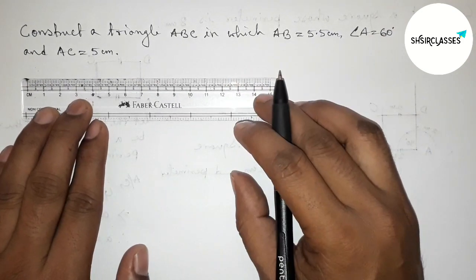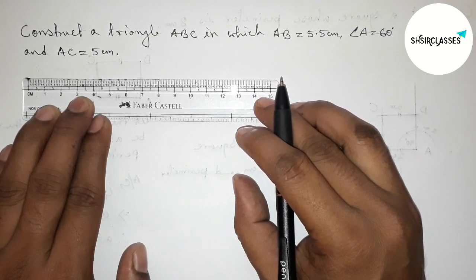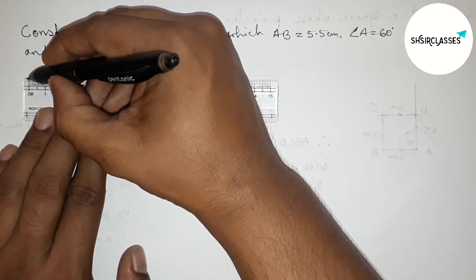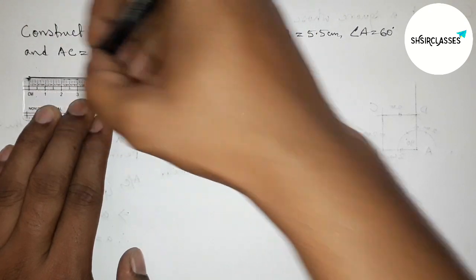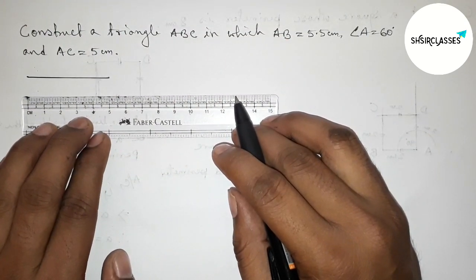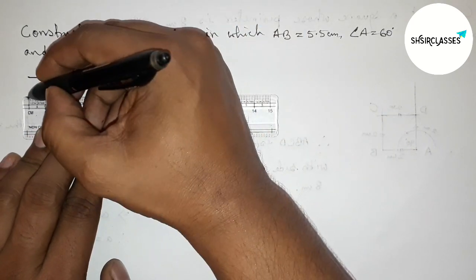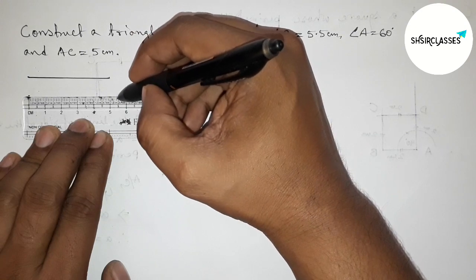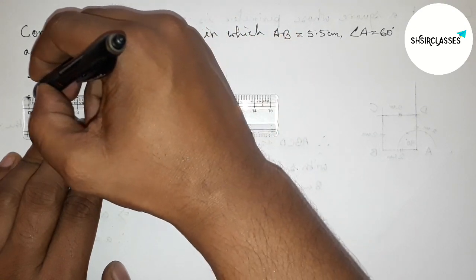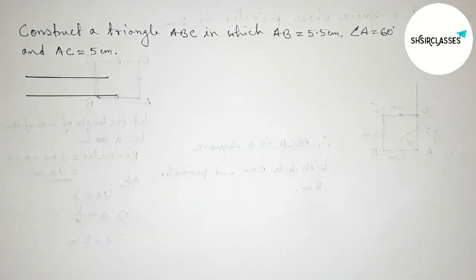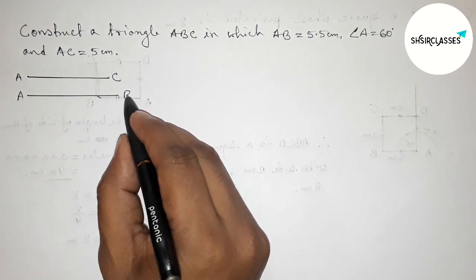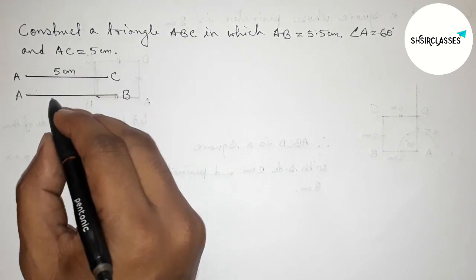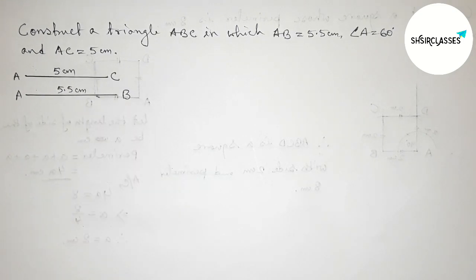First of all, let us draw the given two sides. First, drawing a 5 centimeter line segment — this is AC, 5 centimeter. And drawing another 5.5 centimeter line segment — this is AB, 5.5 centimeter.